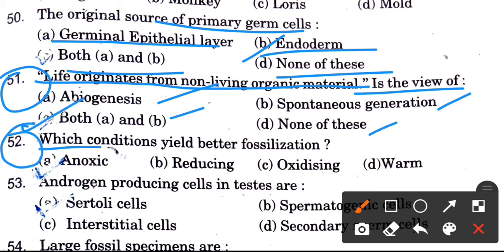Which condition yields better fossilization? Options are anoxic, reducing, oxidizing, and warm. When oxidizing conditions are reduced, fossils develop better.